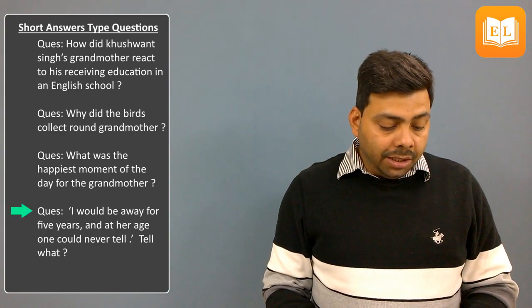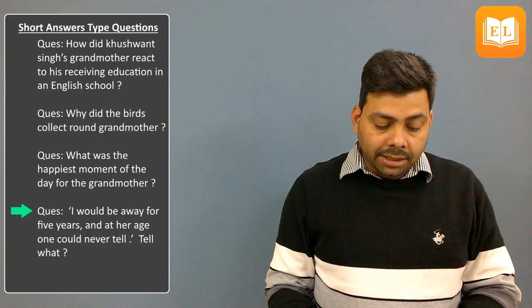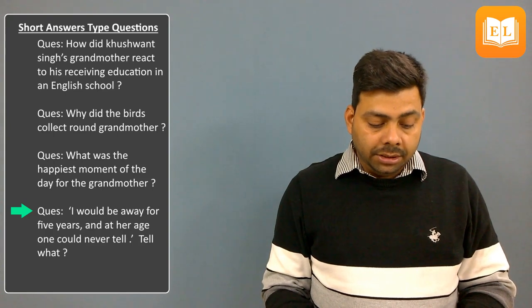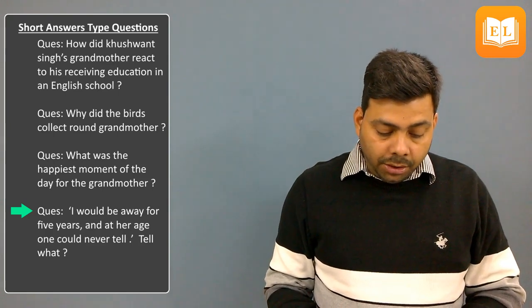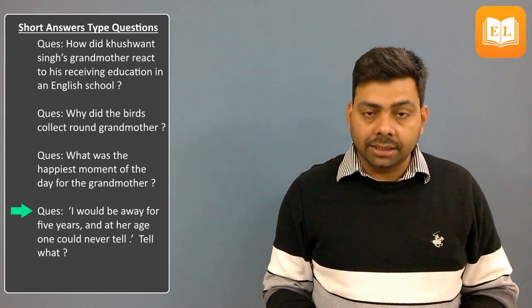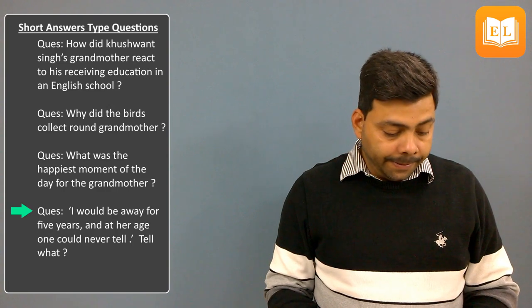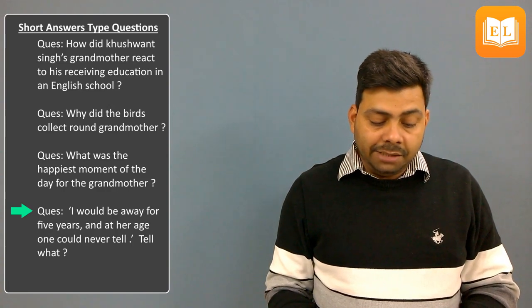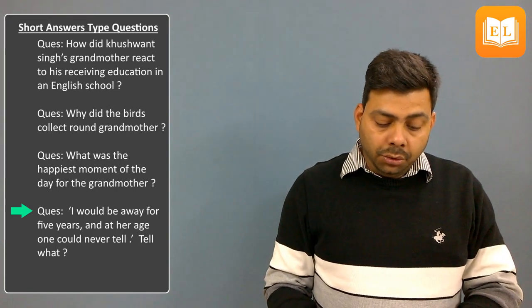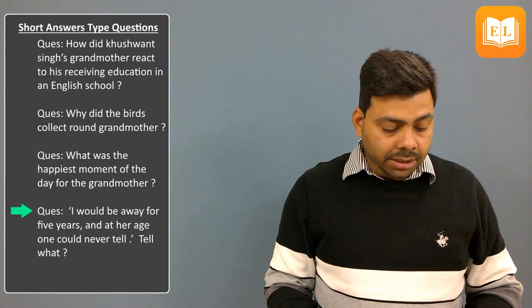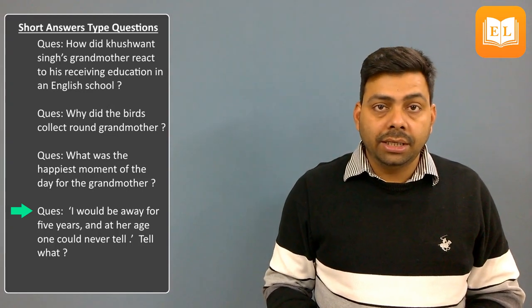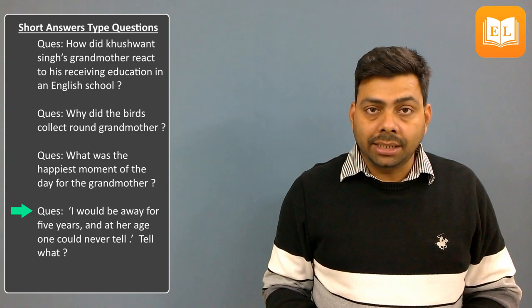Next question: I would be away for five years, and at her age one could never tell. Tell what? Answer: The author's grandmother was terribly old. One could not tell how long a person at her age was going to live.